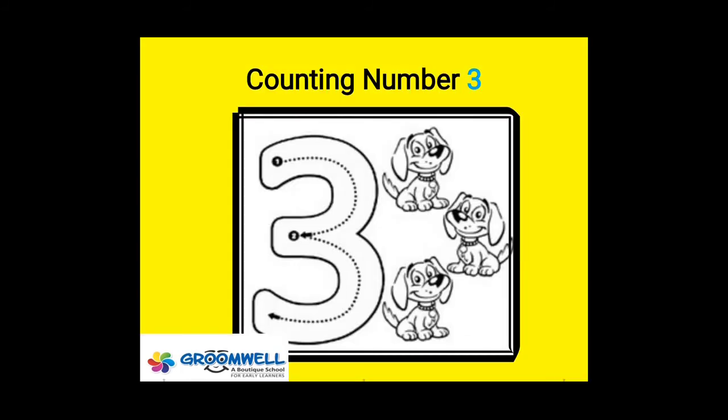Now, our second number is number 3. This is number 3. Let's count how many puppies are there in the picture. Number 1, 2 and 3. How many puppies are there? There are 3 puppies.